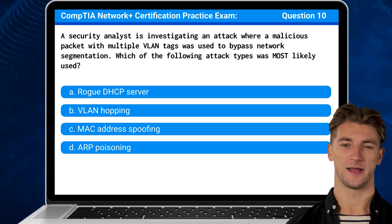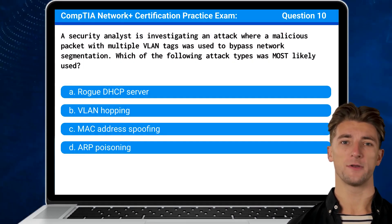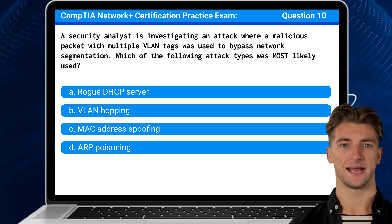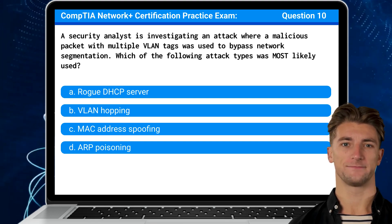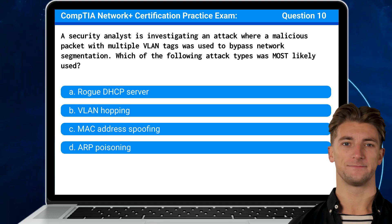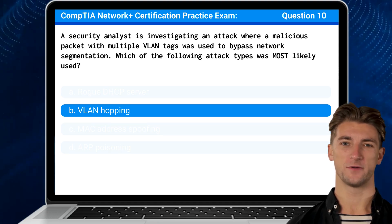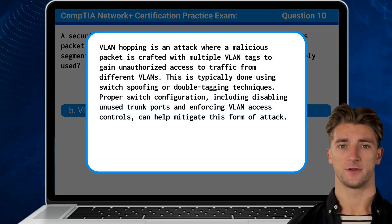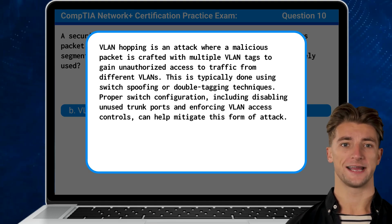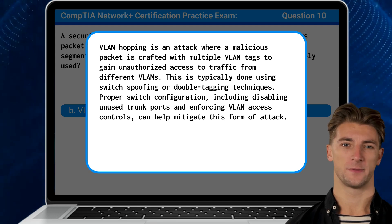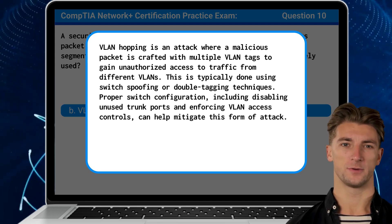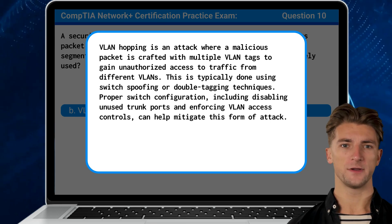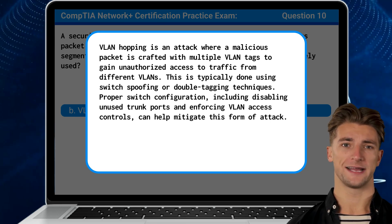Question 10. A security analyst is investigating an attack where a malicious packet with multiple VLAN tags was used to bypass network segmentation. Which of the following attack types was most likely used? The answer is B: VLAN hopping. VLAN hopping is an attack where a malicious packet is crafted with multiple VLAN tags to gain unauthorized access to traffic from different VLANs. This is typically done using switch spoofing or double tagging techniques. Proper switch configuration, including disabling unused trunk ports and enforcing VLAN access controls, can help mitigate this form of attack.